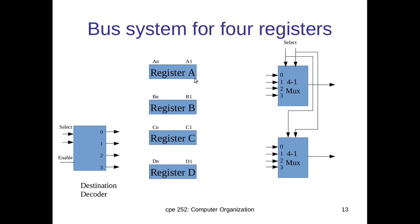We also have a destination decoder that is used to select a destination register. The decoder has two select lines, one enable line, and a set of output lines. If we enable this decoder, then based on the select line, any one of the output lines will become activated. That is about the destination decoder.